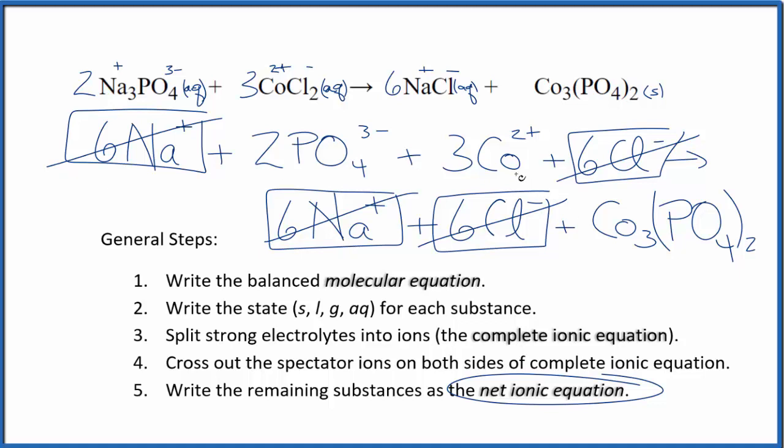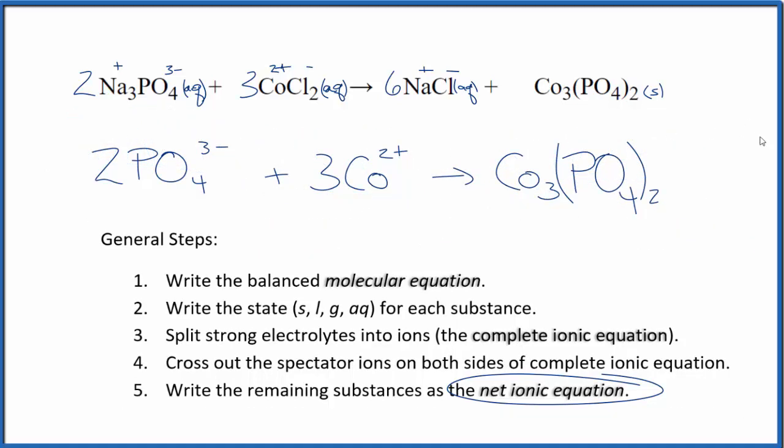Let me clean it up. We'll put the states in and have our net ionic equation. So this is the balanced net ionic equation for Na3PO4 plus CoCl2. Often you'll see the positives put before the negatives here, positive ions. That's okay. Either way is correct.